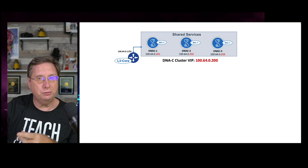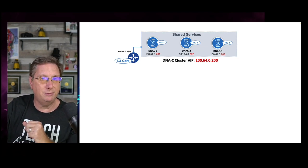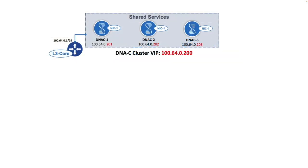That infrastructure is going to include three DNA Centers running on the C220 M5 servers described earlier. When we get these servers, we're going to have to interconnect them into a network environment referred to as our shared services block. Other devices and resources will be added to this block, including DHCP servers, DNS servers, our IPAMs, as well as, in my specific lab, our wireless LAN controllers.